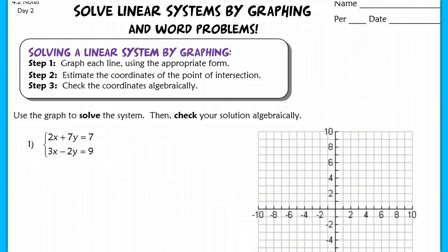When you solve a linear system by graphing, you're going to graph the line using the appropriate form. If it's in standard form, use intercepts. If it's in point-slope form, use point-slope form, etc. You're going to estimate the coordinates of the point of intersection because sometimes graphing can be unreliable, and then you want to check your coordinates algebraically to make sure that your coordinate is correct.